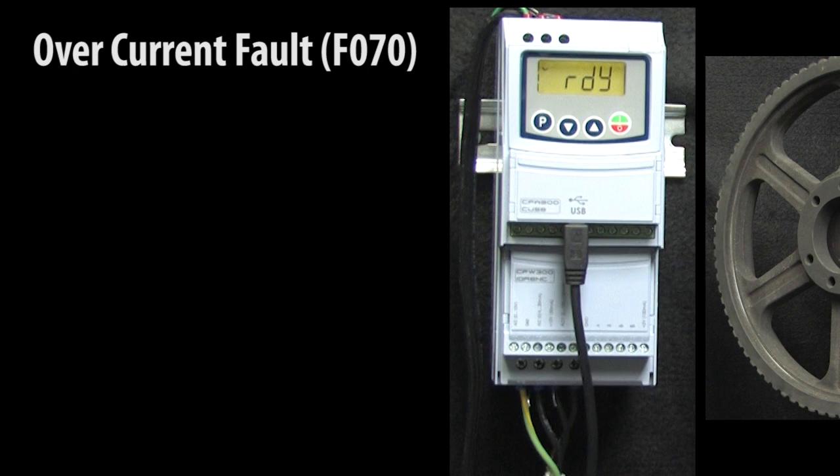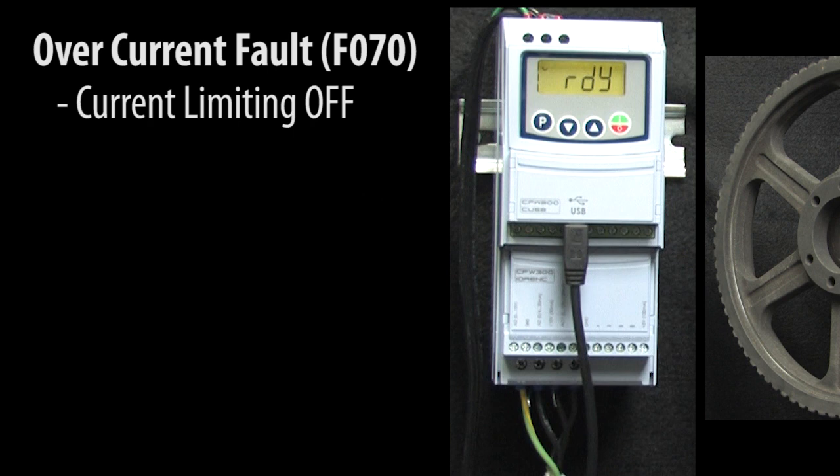Another possible reason for an overcurrent fault is that the built-in current limit function has been turned off. The WEG CFW300 drive has current limiting built in, so normally if you specify an acceleration ramp that is too short, the drive will automatically change the ramp time to prevent an overcurrent fault.